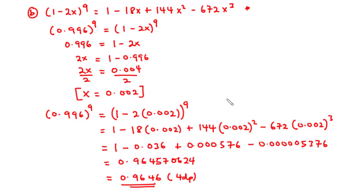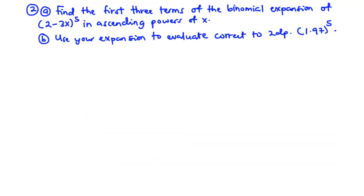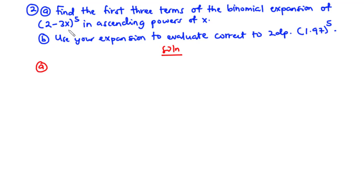Now let's move on to the next example. Question 2A: Find the first three terms of the binomial expansion of (2-3x)^5 in ascending powers of x. Part B: Use your expansion to evaluate 1.97^5 correct to two decimal places. The binomial (2-3x)^5 is in the form (a+x)^n, so we need to convert it to the form (1+x)^n.